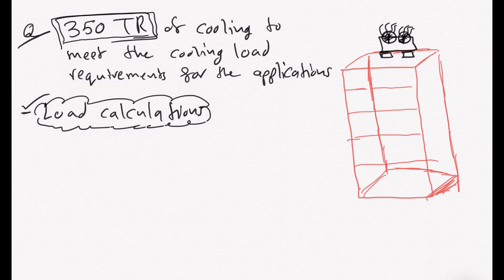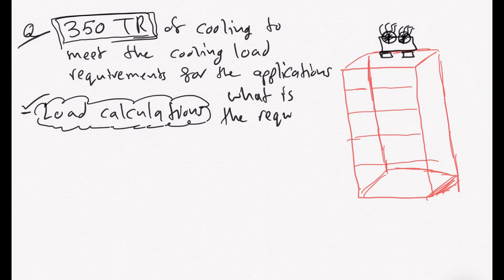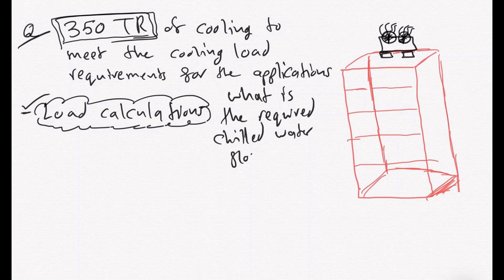Let's assume that you're familiar with load calculations, you are able to obtain the required load calculations for various applications, and you've reached the point where you have a building. For your building, you've managed to find out that you need 350 tons of cooling to satisfy the space cooling load requirements. So the question is: what is the required chilled water flow rate that will satisfy the cooling requirements and provide 350 tons of cooling?